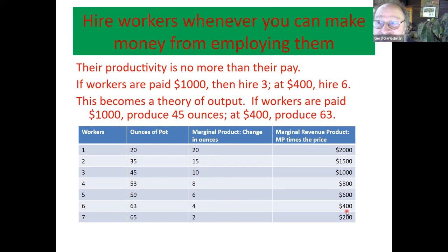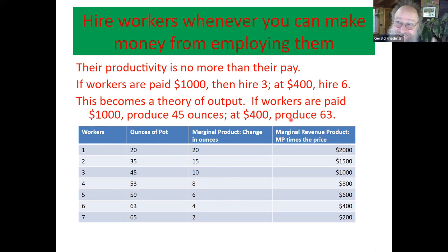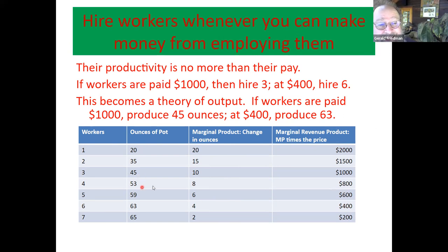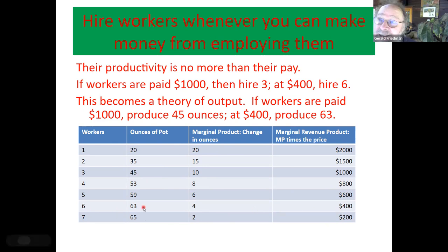Workers are paid $2,000 — dangerous work — you hire one. You actually have a theory of output from this. Workers paid $1,000, you hire three, and your output is 45 ounces. Workers paid $400, you hire six, and your output is 63 ounces. Workers paid $2,000 — high wages — you scale back production, hire only one worker, and produce 20 ounces.